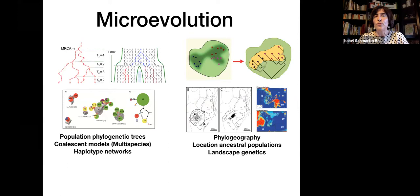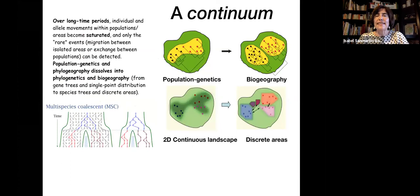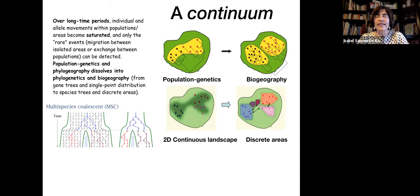Questions at the microevolution level include: where did this population come from, what is the ancestral location, and how fast do individuals migrate within a population? The separation between micro and macroevolution is not clear — it's a continuum. Over long time periods, individual and allele movements within populations become saturated, meaning only rare events — movements between populations, between species, between locations — remain visible, and those are what we can detect at the macroevolutionary phylogenetic level.